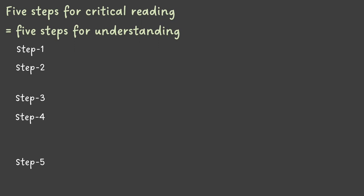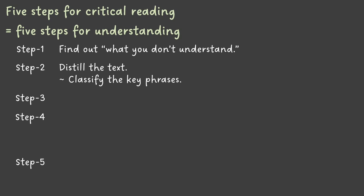So how can we overcome this? Here I would like to show the fundamental map of what we are going to cover throughout these five units of the lecture. In the first step — actually today — we are going to find out what you don't understand. I'm going to talk about the way to find out what you don't understand. Then in step two, I'm going to talk about the distillation of the text, or distillation of the scientific paper.